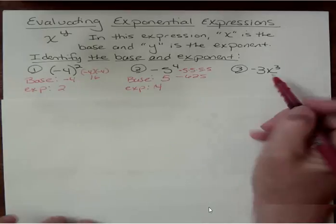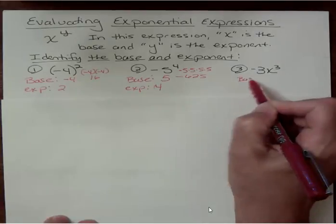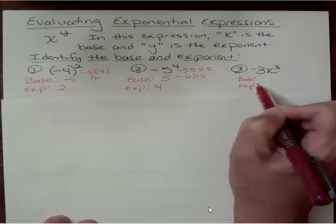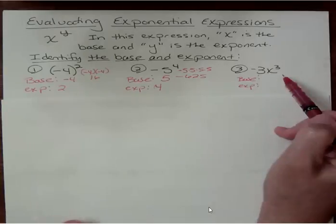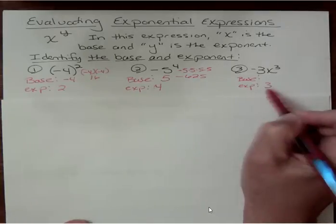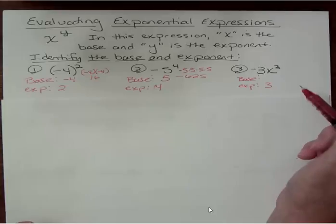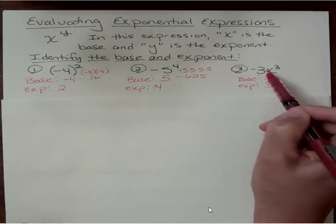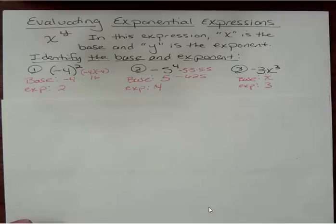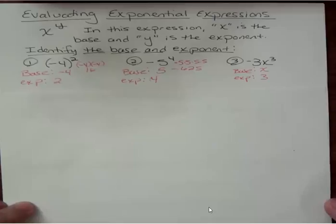What about this problem? What's the base and what's the exponent? Well, the exponent is 3. That's always the easy one. But what's the base? The base is what the exponent is touching. In this case, it's just the x. The negative 3 out front has nothing to do with our base. So it's important to be able to identify your base and your exponent as you move through those problems.